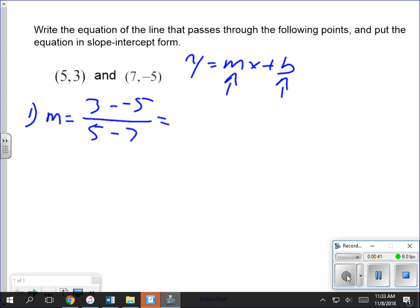3 minus negative 5 is actually 3 plus 5, which gives us 8. 5 minus 7 is negative 2, which simplifies to negative 4. That's our slope. That's our m.